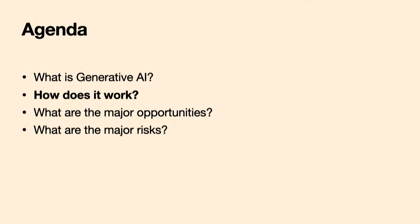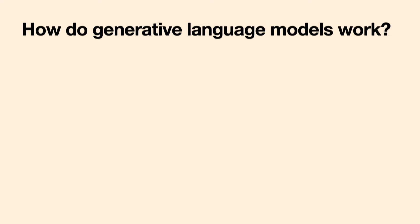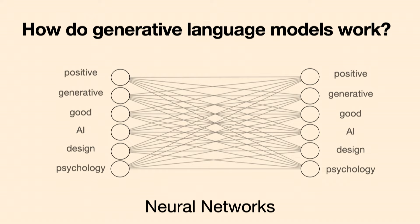How does this work? There are really three components to think about. I'll focus on language models because the basic principles are similar for image, music, and code. The first buzzword is that they're neural network models. Neural networks are actually very old technology — if you're familiar with them, great; if not, you can write them down on paper, you'd just need a lot of paper.